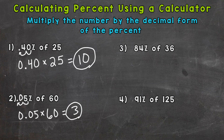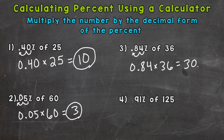Number 3: 84% of 36. So again, divide the percent by 100 to get the decimal form — move the decimal twice to the left. We get 84 hundredths times 36, and that gives us an answer of 30 and 24 hundredths.